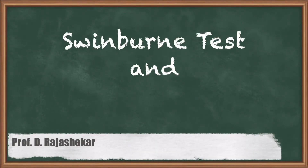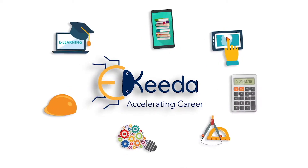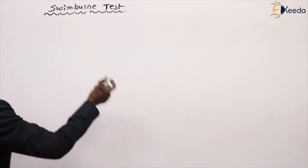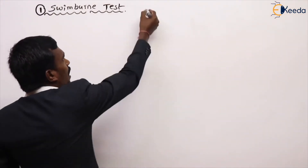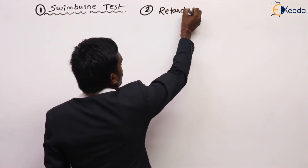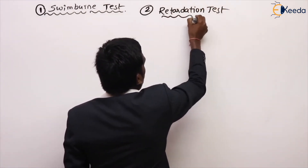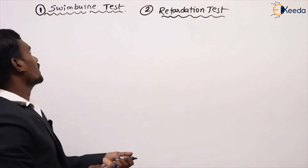Hi friends, in this video we are going to discuss about Swinburne's test and retardation test. The knowledge tests are two types: one is the Swinburne's test and the second one is the retardation test. These are the two types of tests in our DC machine. Let's see, first of all, Swinburne's test.